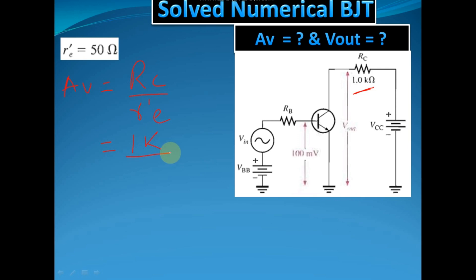So if you solve this, what will you get? If you divide 1 kilohm, that means 1000 ohms divided by 50 ohms, you will get 20.